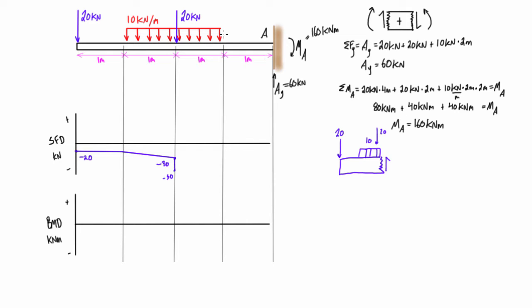Extending the free body diagram to the next marker, we include one more meter of the 10 kilonewtons per meter distributed load, making the total distributed force 20 kilonewtons over two meters. With both point loads and the distributed load all pressing down — 20, 20, and 20 — we get a shear force of negative 60 kilonewtons. That's a drop of 10 kilonewtons, giving a linear section with the same slope as before. The point load stepped us down by its magnitude. The shear remains constant at minus 60 kilonewtons through the remaining flat section.